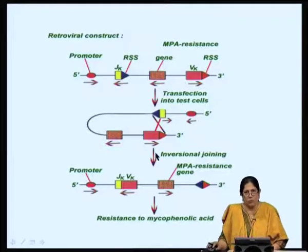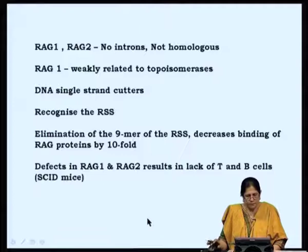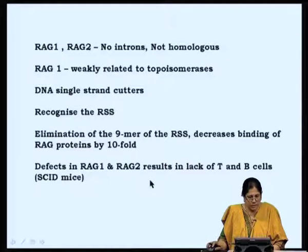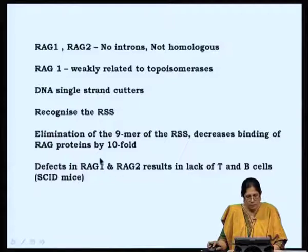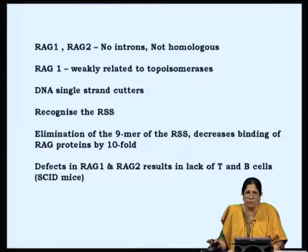The same experiment was also utilized later to show the presence of TdT and its association with diversity generation. RAG1 and RAG2 are absolutely required for the generation of B and T cells. Defects in RAG1 and RAG2 result in lack of T and B cells. There is a strain of mice called SCID mice — Severe Combined Immunodeficiency — where mutations in RAG1 and RAG2 do not allow rearrangement of the immunoglobulin genes, meaning no B cells or T cells are made. Such mice therefore lack the acquired arm of the immune system completely.